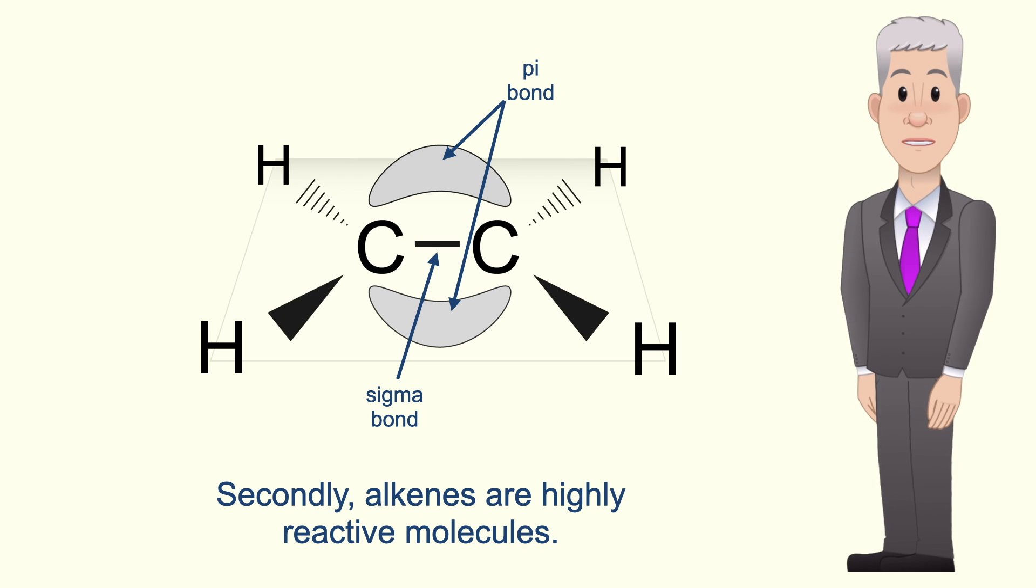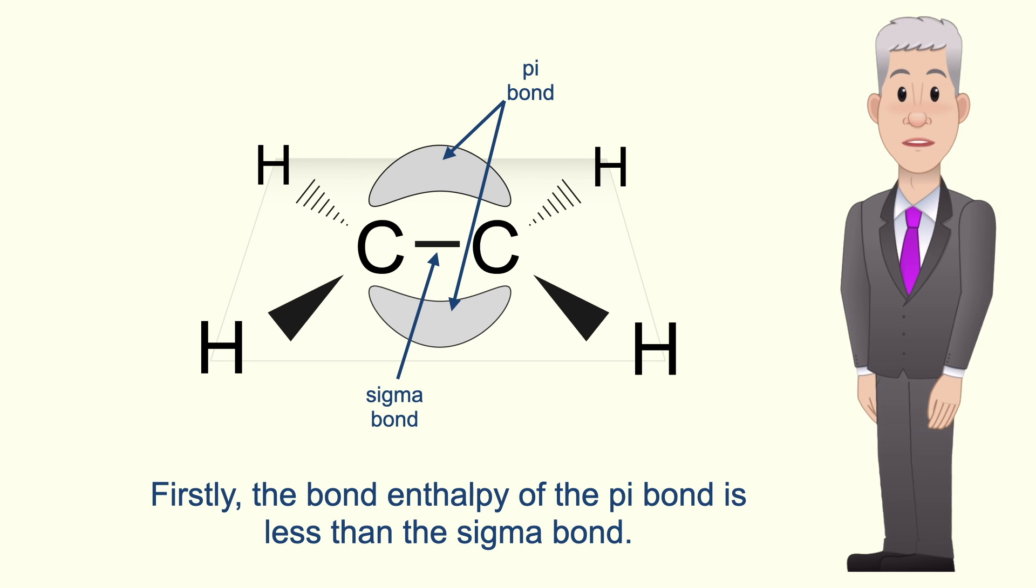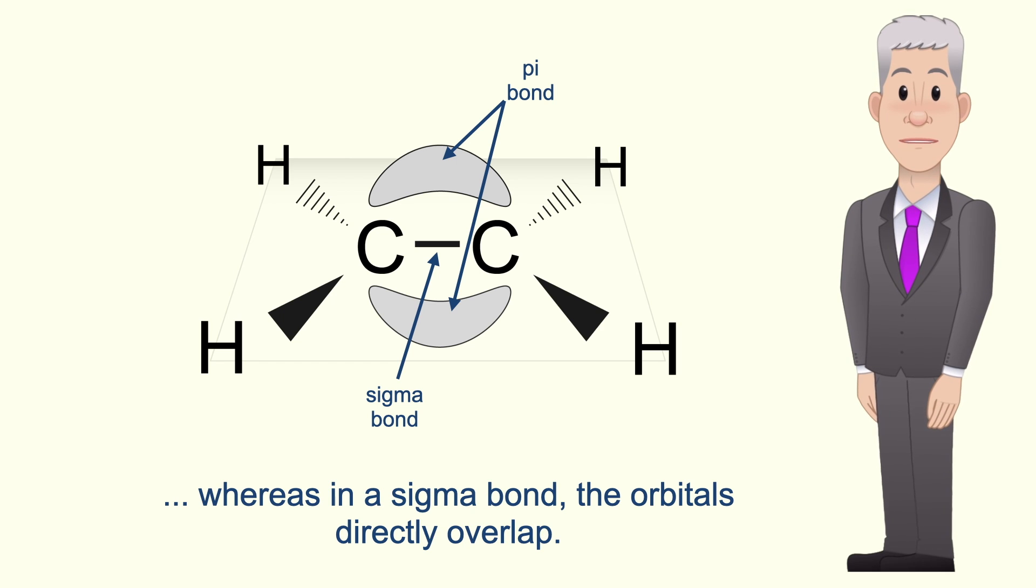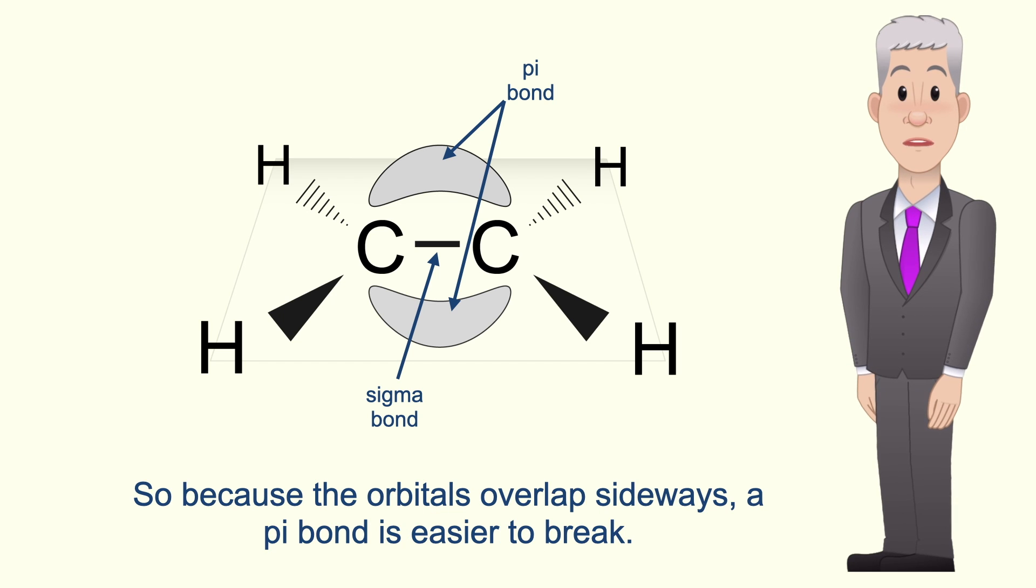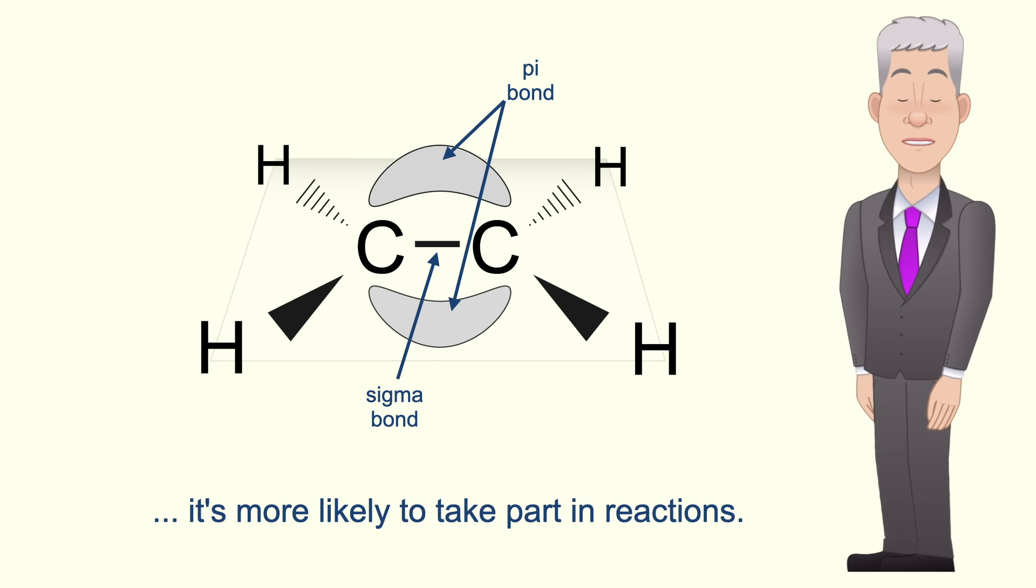Secondly alkenes are highly reactive molecules and again this is due to the double bond. Firstly the bond enthalpy of the pi bond is less than the sigma bond. That's because a pi bond is a sideways overlap of orbitals whereas in a sigma bond the orbitals directly overlap. So because the orbitals overlap sideways a pi bond is easier to break and because it takes less energy to break the pi bond it's more likely to take part in reactions.